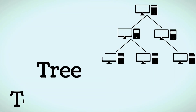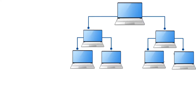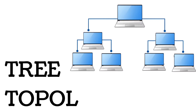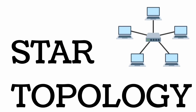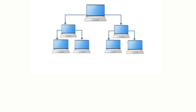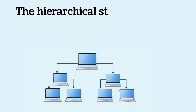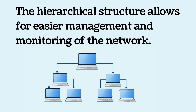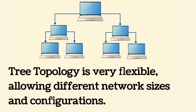Tree topology is a type of network where each node is connected in a hierarchy, and it is a combination of bus and star topology. Advantages: it is easy to add more devices to the network; the hierarchical structure allows for easier management and monitoring; and tree topology is very flexible, allowing different network sizes and configurations.